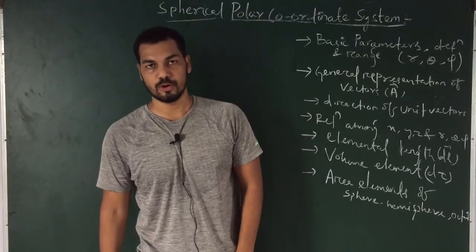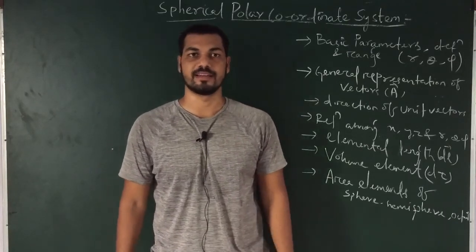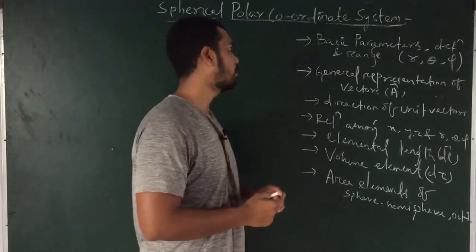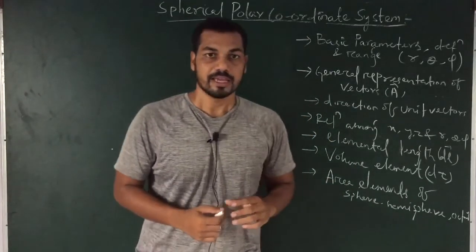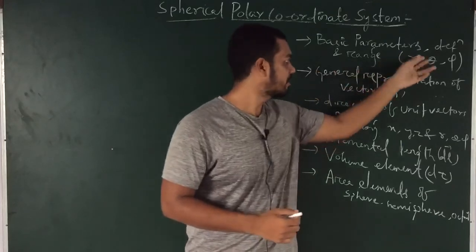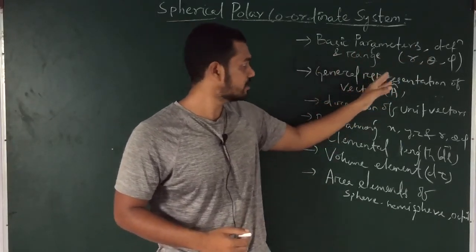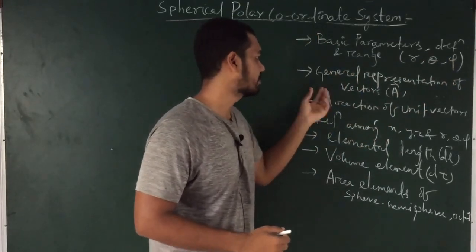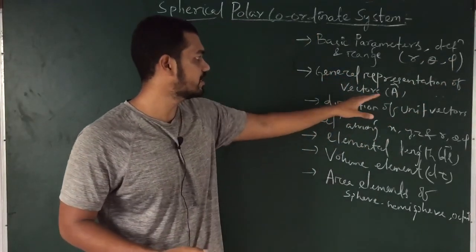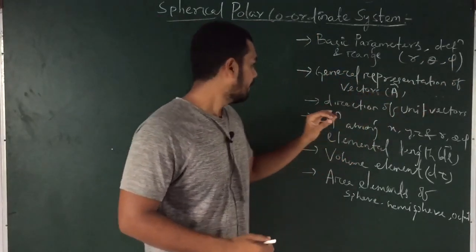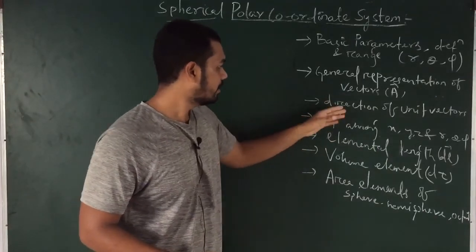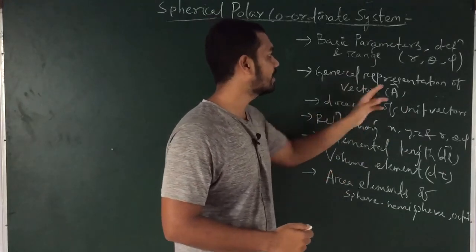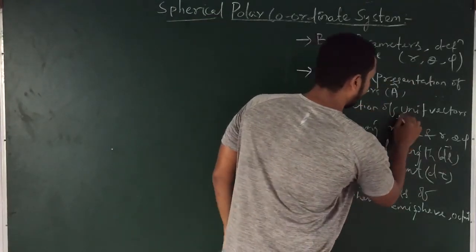Hi guys, this is Dinesh, welcome you all to my YouTube channel. In this lecture we are going to discuss all about the spherical polar coordinate system. Here we will discuss the basic parameters — the definition and the ranges of R, Theta and Phi — which are the basic parameters. Then we will go for the general representation of vector A. Then we will discuss about the direction of unit vectors, that is R cap, Theta cap and Phi cap.